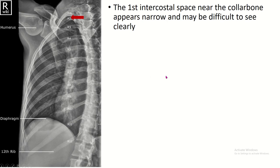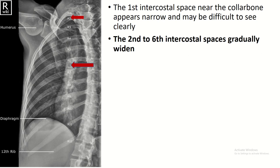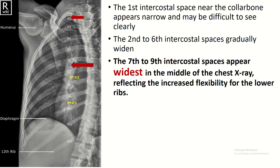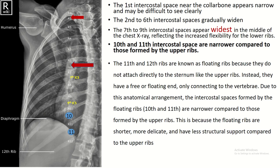On the chest X-ray, this is the first intercostal space. The 2nd to 6th intercostal spaces gradually widen. The 7th to 9th intercostal spaces appear widest in the middle of the chest X-ray. The 10th and 11th intercostal spaces are narrower compared to those formed by the upper ribs. The 11th and 12th ribs are known as floating ribs because they do not attach directly to the sternum like the upper ribs — instead they are free-floating and only connect to the vertebra.